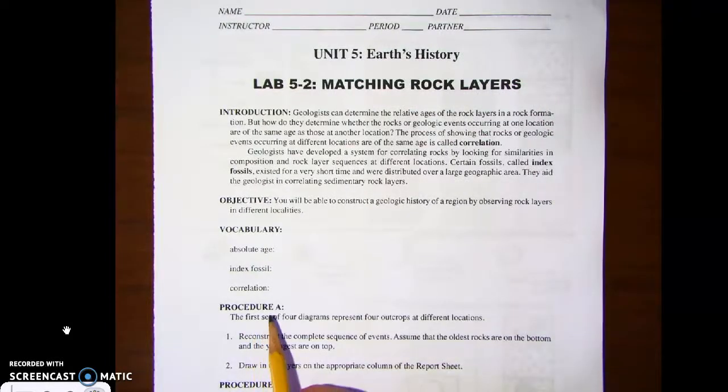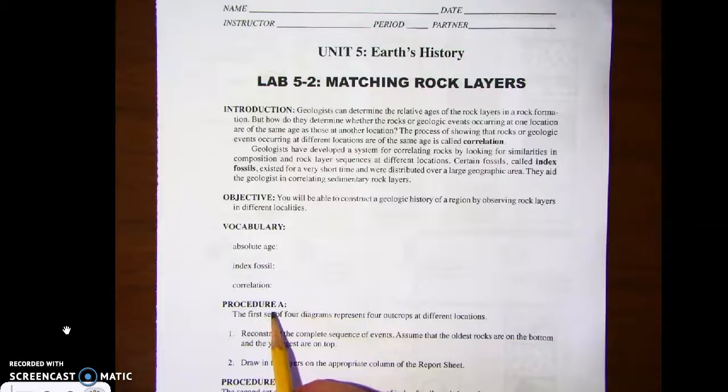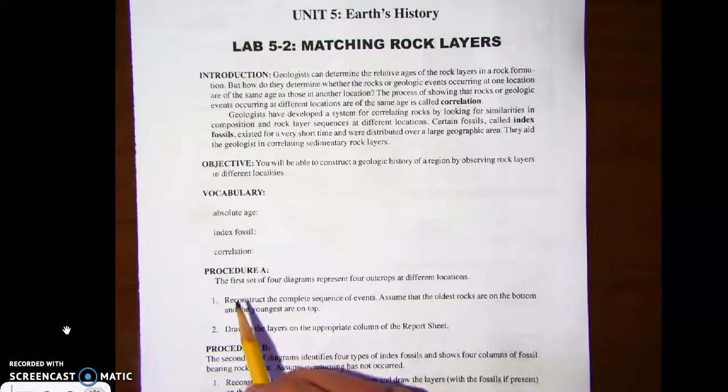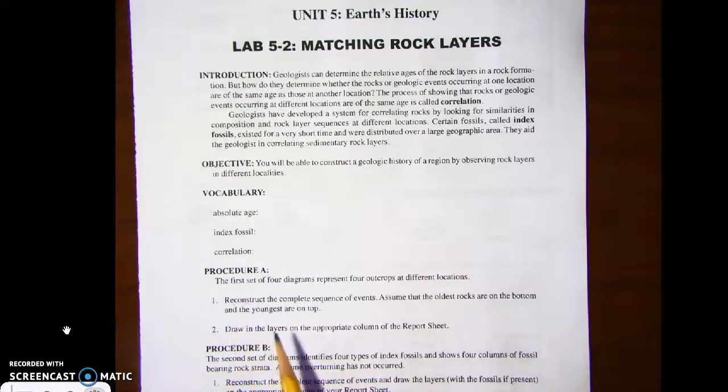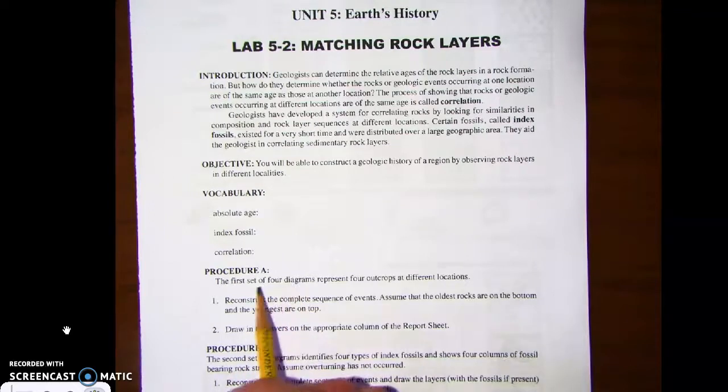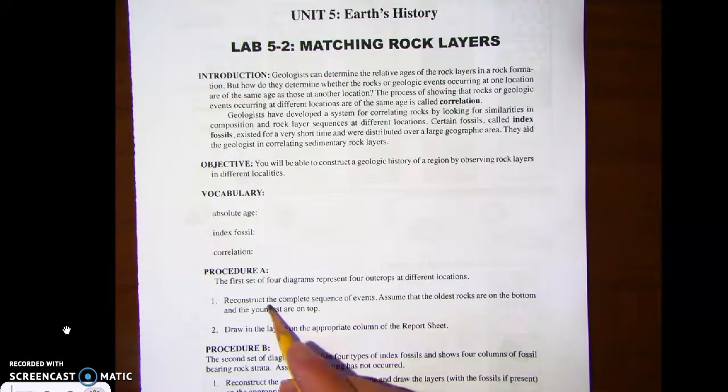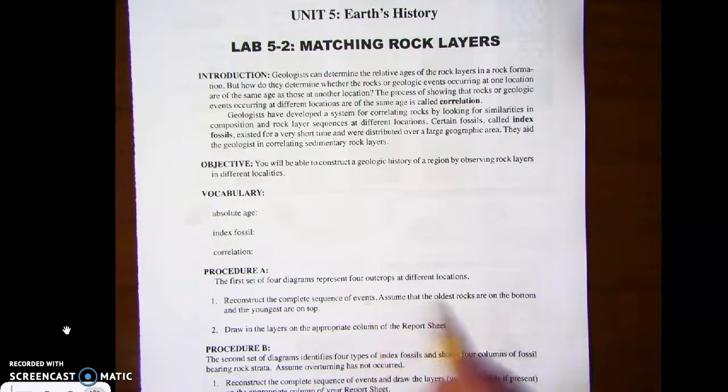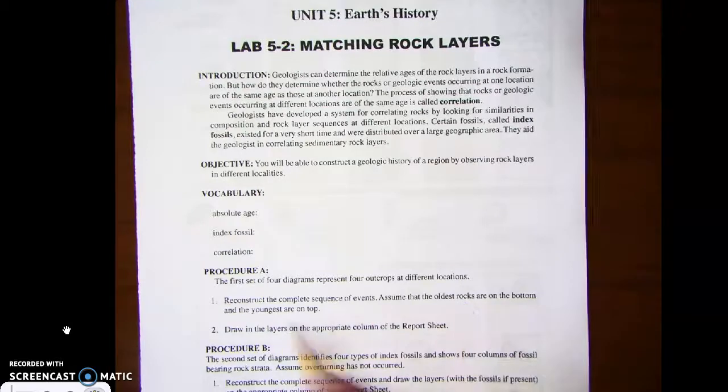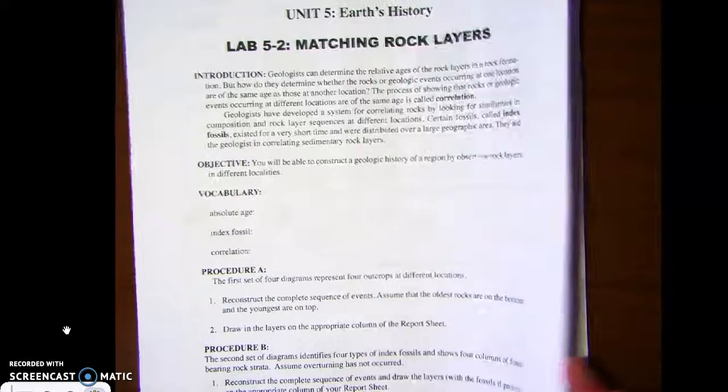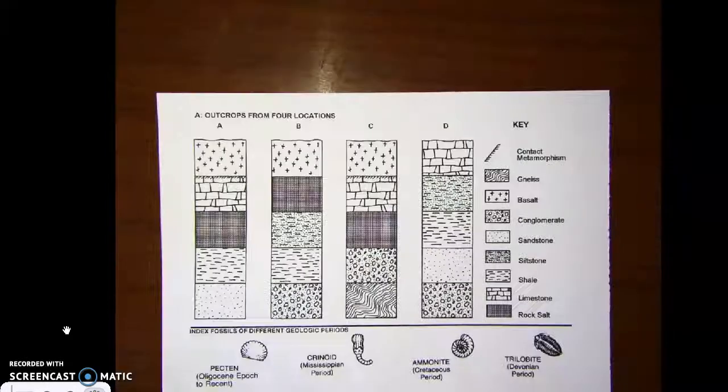I want to do each procedure as its own video, so the first part we'll start with Procedure A. I want to spend a little bit of time going over Procedure A because I think it is a little confusing. It says the first set of four diagrams represent four outcrops at different locations. Reconstruct the complete sequence of events, assume that the oldest rocks are on the bottom and the youngest are on top. Draw the layers on the appropriate column of the report sheet.